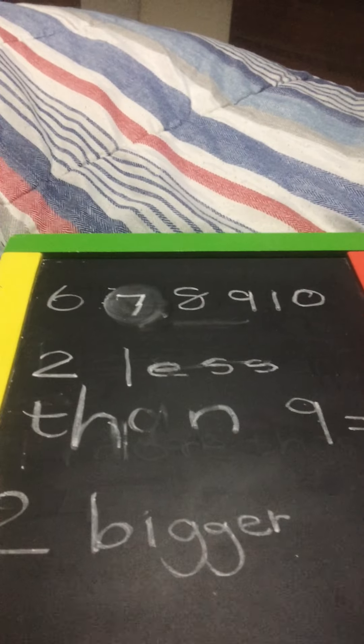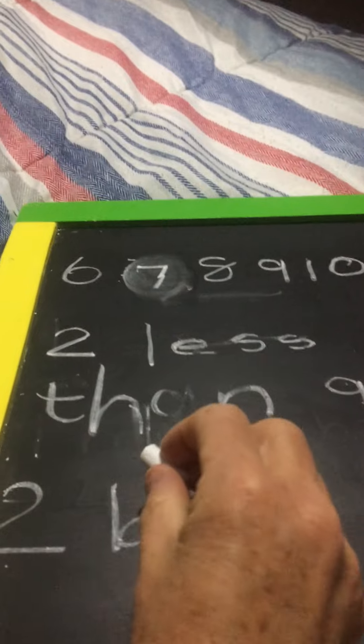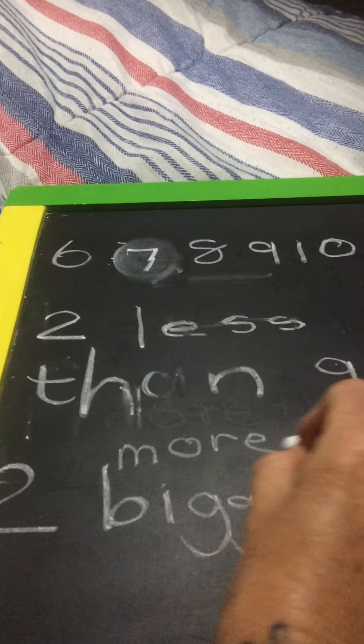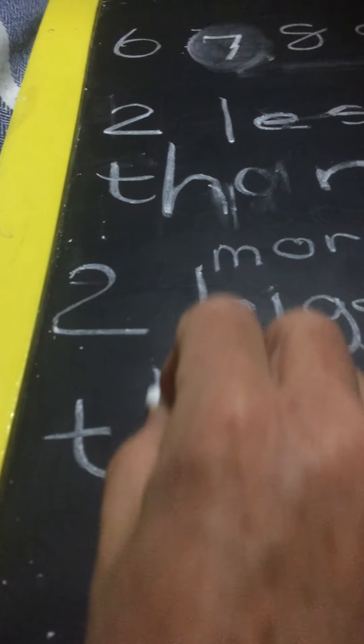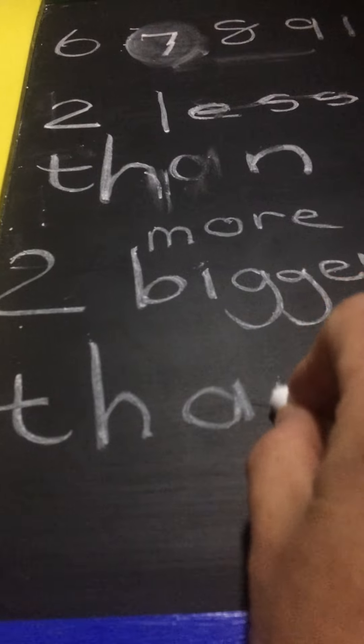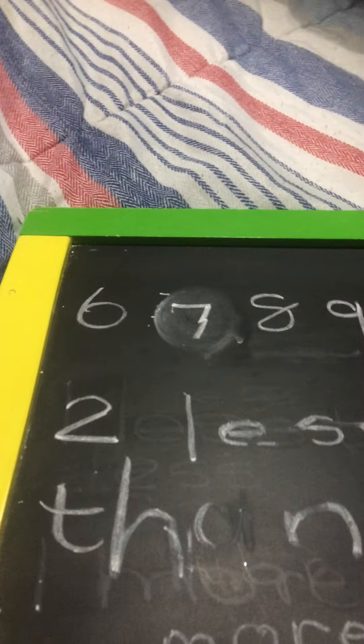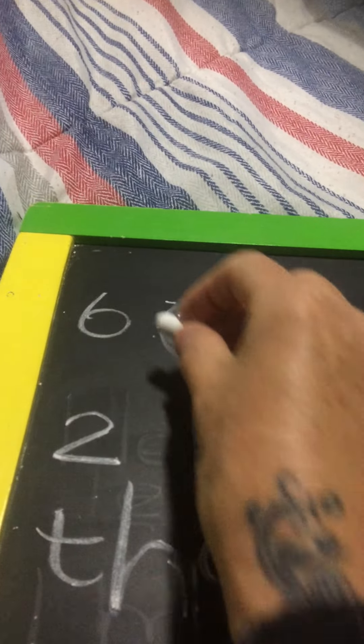What happens if I want two bigger or more than six? Two bigger than six. So they're in the number after.